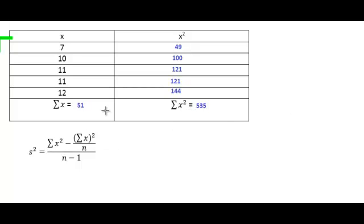Next, let's plug those two summations into our formula. The summation of the squared x's is 535. Let's subtract the summation of the x's, which is 51. We'll have to square that number and divide it by the sample size, which is 5. Next, we have to divide by the sample size minus 1. So, 5 minus 1 is 4.